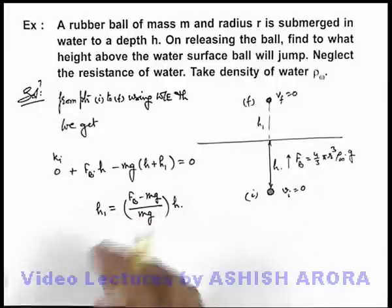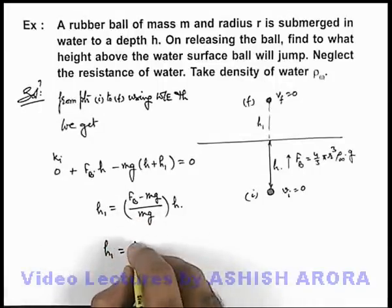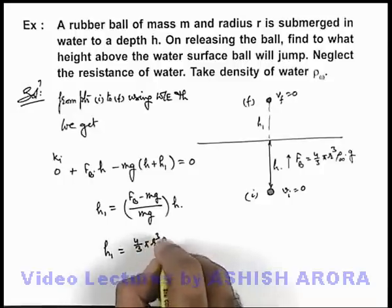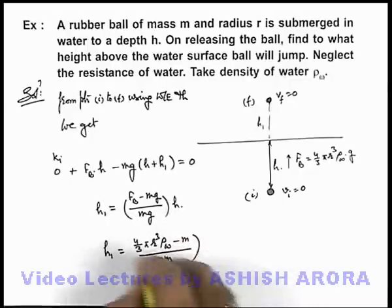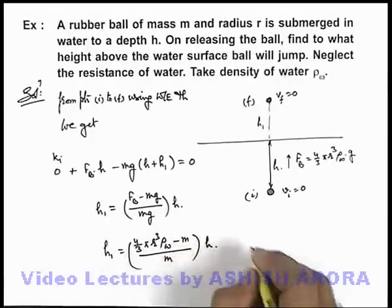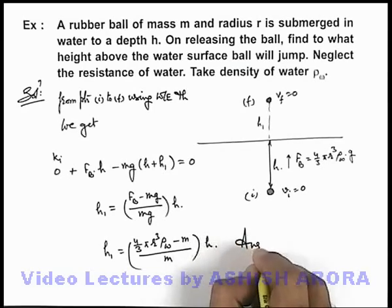So the total height can be calculated as [(4/3)πr³ρ_w - m]/m multiplied by h. This will be the answer to this problem.